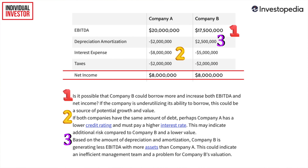Point number two: if we assume that both companies have a similar amount of debt, then Company A seems to be paying a lot more in interest. This could mean that Company A has a lower credit score and couldn't secure a low interest rate for their loans, which means they are a more risky company to invest in. The last point: Company B has a higher amount of depreciation and amortization, meaning it has more assets than Company A. However, Company B has been generating less EBITDA with more assets, which could translate into management inefficiencies or underutilization of those assets.